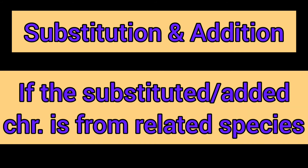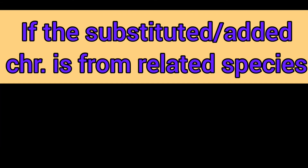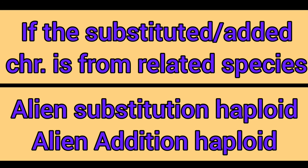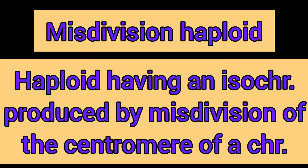However, if the extra or substituted chromosome is taken from a related but different species, then it is called an alien substitution haploid or an alien addition haploid respectively. The last type is the misdivision haploid — a haploid having an isochromosome produced by a misdivision of the centromere of a chromosome. Isochromosome means having arms of the same type.